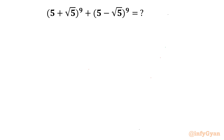We have to simplify (5 plus √5)⁹ plus (5 minus √5)⁹. I am going to use substitution — this first bracket is A and this second bracket is B. So what we have to find is A⁹ plus B⁹.